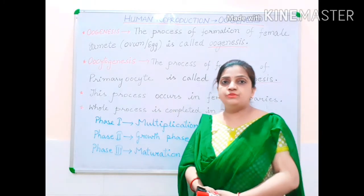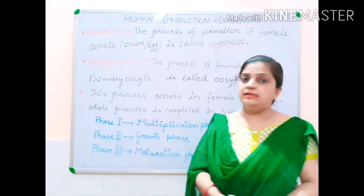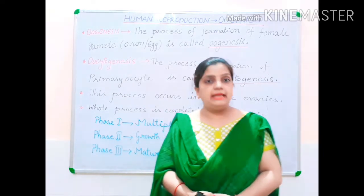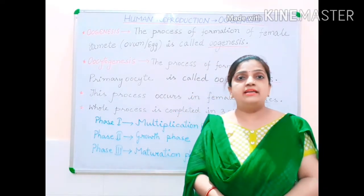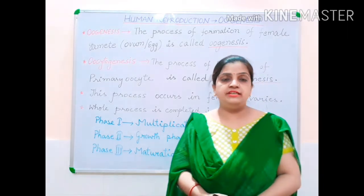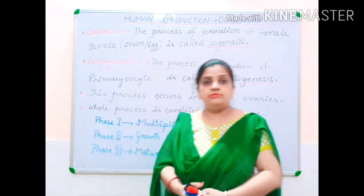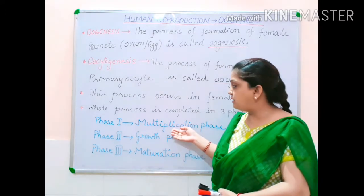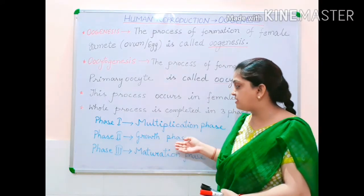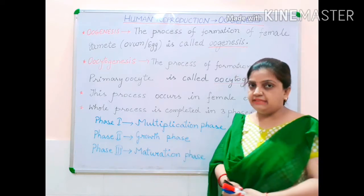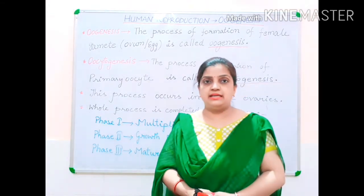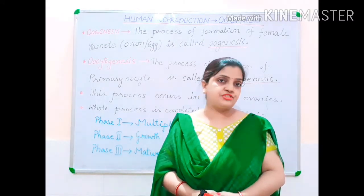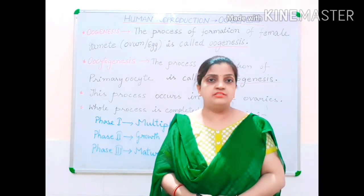Learning diagrams and the names of parts makes biology very easy. So first I will briefly explain what happens during the multiplication phase, growth phase, and maturation phase, then I will move to the line diagram and the diagrammatic explanation of the whole oogenesis process.